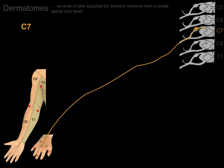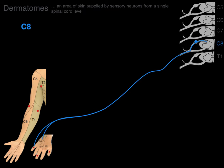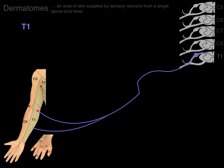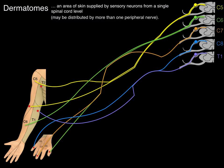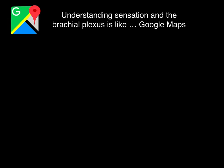Let's look at C7. There we have sensory neurons coming from different areas of that dermatome, and the radial and median nerves are transmitting those. For C8, the ulnar nerve is primarily transmitting those sensory neurons. And for the T1 dermatome area, the medial cutaneous nerve of the arm and forearm are transmitting those sensory neurons. Now we have a bunch of these dermatomes and it looks like those sensory neurons are floating in outer space, but we lay on top of that the brachial plexus — and now we can see the roadways. Understanding sensation of the brachial plexus is like understanding Google Maps.